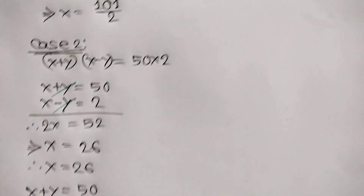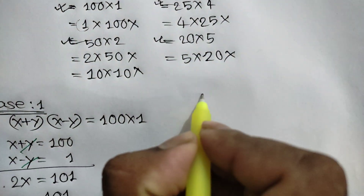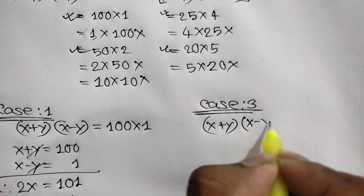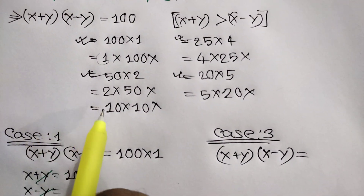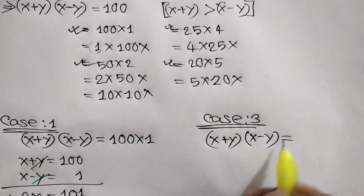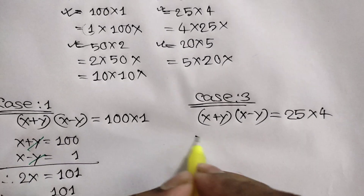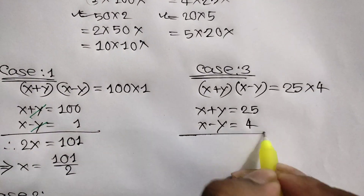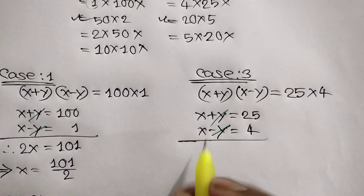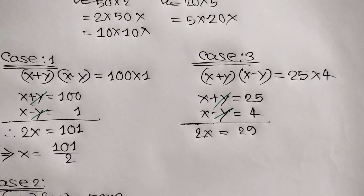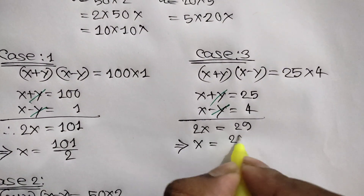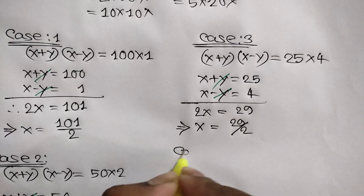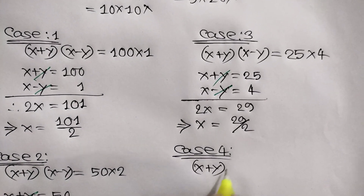Case 3: x plus y times x minus y equals 25 times 4. So x plus y equals 25 and x minus y equals 4. Adding these two equations, y cancels out and we get 2x equals 29. Dividing both sides by 2, x equals 29 over 2, which is a fractional number, so it is rejected.